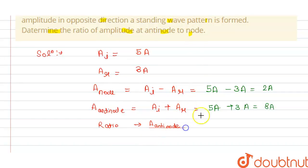And we have to take the ratio, the ratio of the antinode with the node. So we can write here amplitude of antinode and this is amplitude of node, so this will equals to 8A divided by 2A.